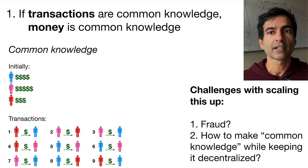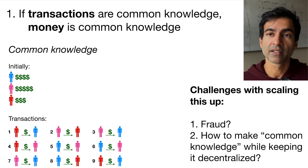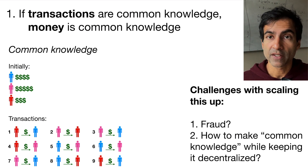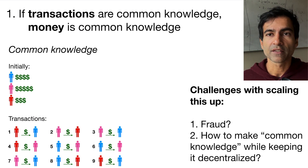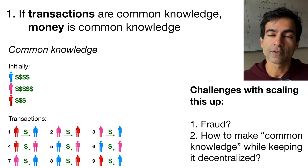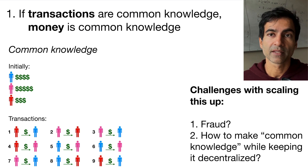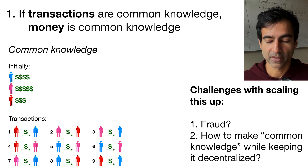Today we do have the internet. The internet allows a single person to send a message to millions of others, so we do have that ability. One major challenge is how do we prevent fraud — how do we prevent people from inventing fake transactions? A second major challenge is how do we achieve common knowledge, given that when there are millions of people, people will not hear about transactions arriving at the same time. At different points in time, different people will have knowledge about different sets of transactions, making it very difficult to have common knowledge of some set of transactions.